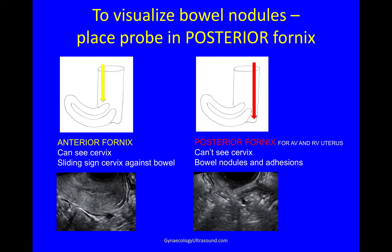You can find bowel nodules particularly through the posterior fornix. We're used to looking through the anterior fornix because you can see the cervix and the sliding sign of the cervix against bowel, but you'll struggle to see bowel nodules because they will be hidden by the cervix. Whereas if you put your probe in the posterior fornix for both an anteverted and a retroverted uterus, you can't see the cervix, but you will be able to see bowel nodules and adhesions.